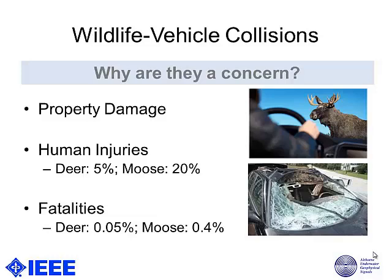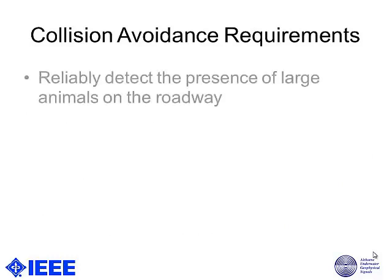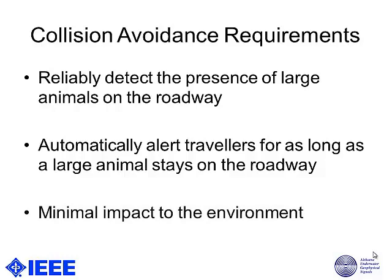That is the background as to why we need such an application. The requirements for collision avoidance are to reliably detect the presence of large animals on the roadway, automatically alert travelers as long as an animal is on the road, and to cause minimum damage and have a very small impact on the environment. This is especially crucial because a lot of highways run through forest areas and natural habitat for some endangered species.